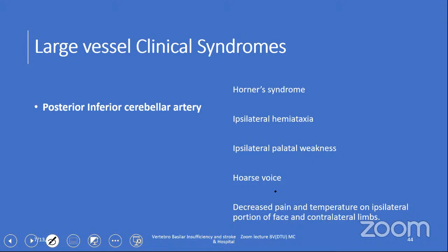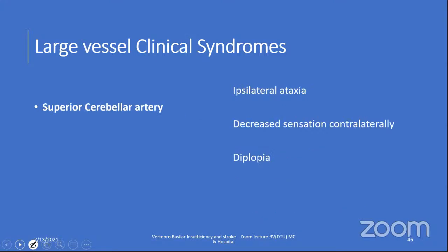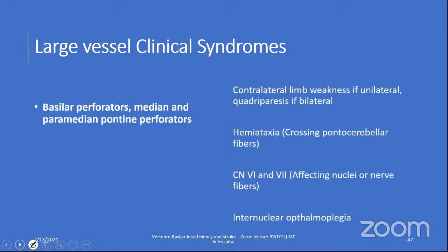AICA territory: ipsilateral deafness, ipsilateral facial weakness, ipsilateral hemiataxia, Horner's syndrome, and contralateral sensory loss in the limbs. Superior cerebellar artery: ipsilateral ataxia and decreased sensation contralaterally. Looking at basilar perforators — median and paramedian pontine perforators — occlusion causes contralateral limb weakness; if bilateral, quadriparesis. The pontocerebelllar fibers bring information to the cerebellum from the cortex, with double crossing (cortico-pontocerebellar tract), explaining ipsilateral hemi-ataxia on the same side. Sixth and seventh nerve can be affected at nuclear/fascicular levels; internuclear ophthalmoplegia occurs because the MLF is involved, running from the sixth nerve parapontine reticular formation to the third nerve nucleus in the midbrain.